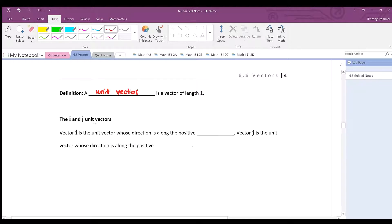We have two very important unit vectors. Vector i is the unit vector whose direction is along the positive x-axis, while j is the unit vector whose direction is along the positive y-axis.